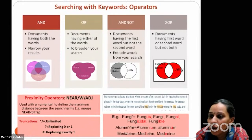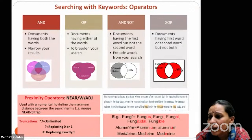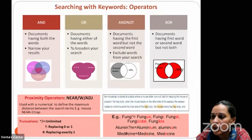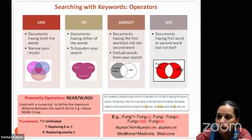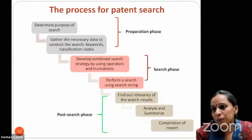The NOT operator retrieves one word but excludes the other — for example, 'peanut butter NOT jelly' returns results with peanut butter but without jelly. The XOR operator retrieves one word or the other, but not both together. These operator combinations, used across different patent fields, form the basis of search strings that we will see applied further in the examples.